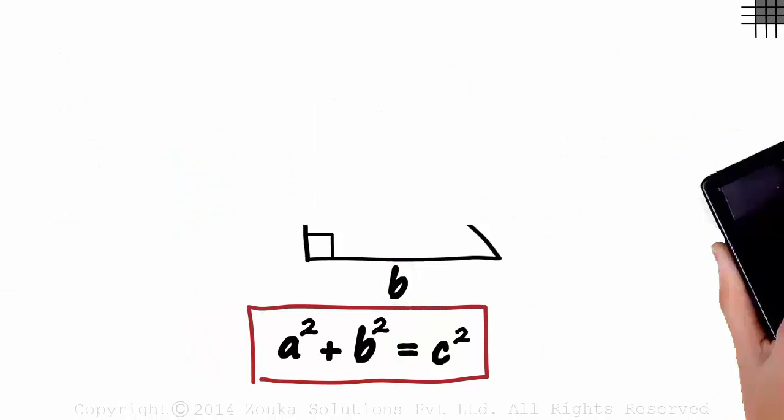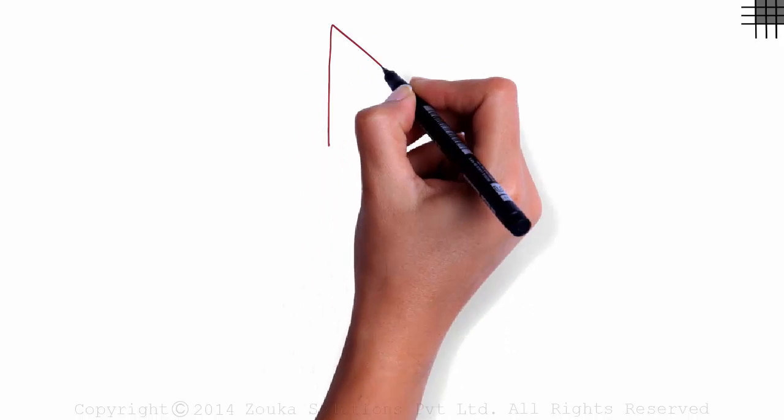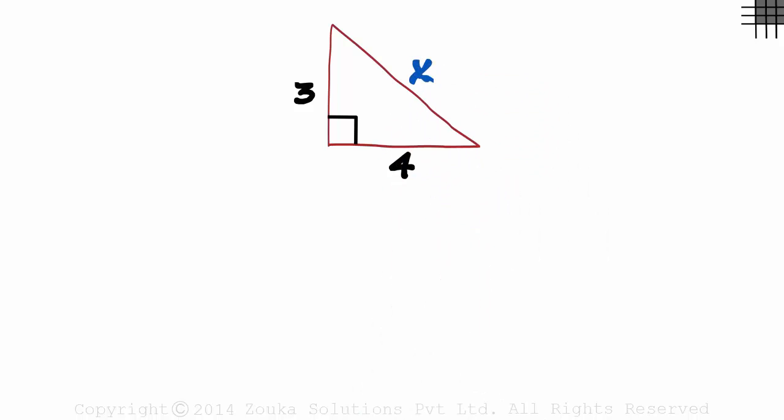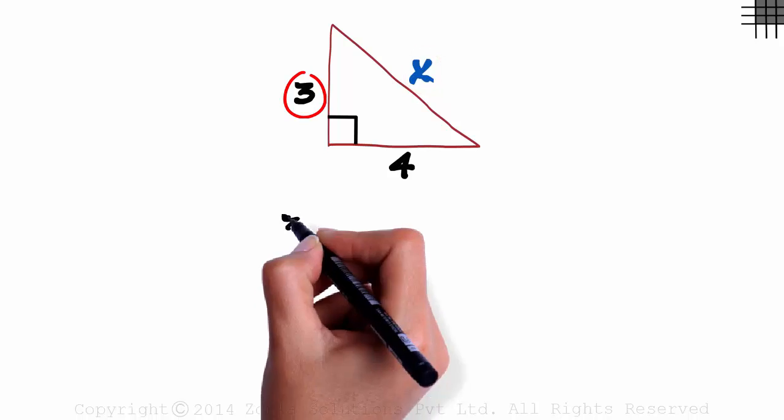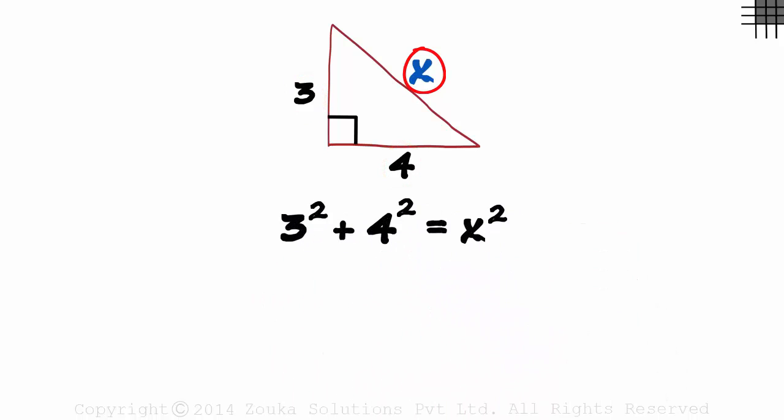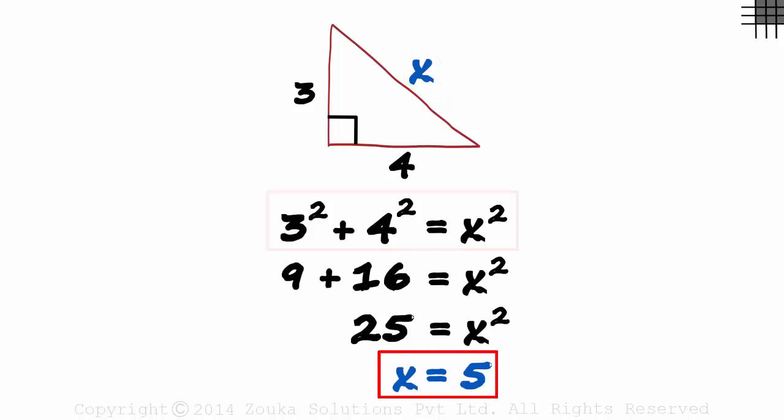What kind of problems would we come across in our exams? We might be given a triangle with the lengths of two of its sides and one unknown. And using the Pythagoras theorem, we can easily find the length of that side. The unknown here is the hypotenuse. So three squared plus four squared will equal X squared. Solving this we get the value of X as five units.